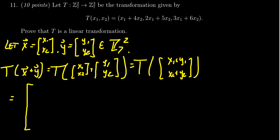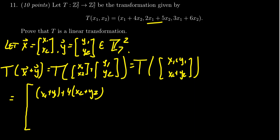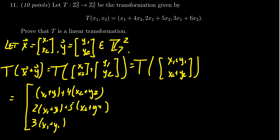Now we're going to apply the definition of the function itself. This function will create a vector in Z7³ with three components. The first component is X1 plus Y1 plus four times X2 plus Y2. The second entry is two times X1 plus Y1 plus five times X2 plus Y2. And the last entry is three times X1 plus Y1 plus six times X2 plus Y2.